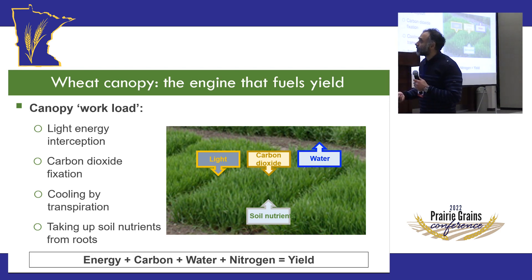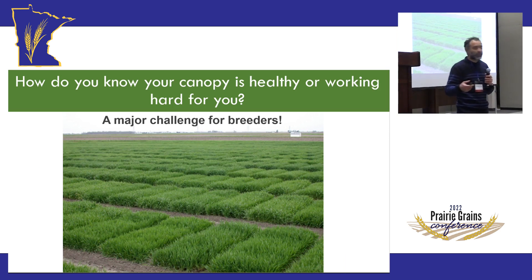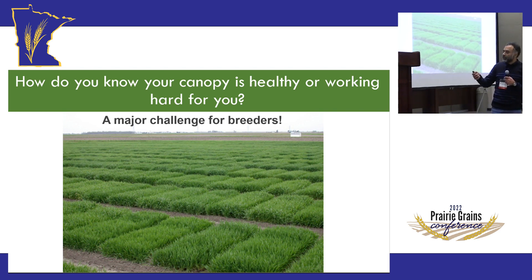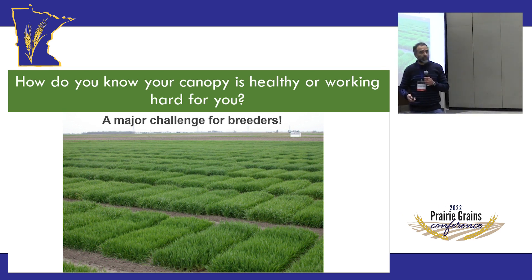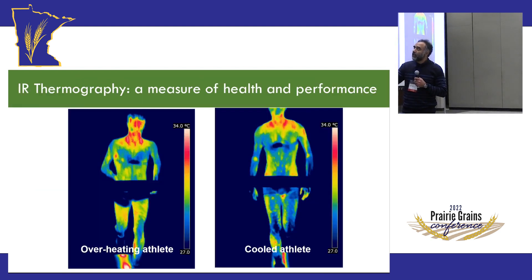Breeders typically have landscapes with hundreds of entries with canopies like this, and the question — which I was asked as a physiologist — is: how do we determine the champion versus the loser when we look at canopies like this? The entry point for this question was relatively straightforward for us: look at infrared thermography. The principle is relatively straightforward and comes from actual scientific papers.